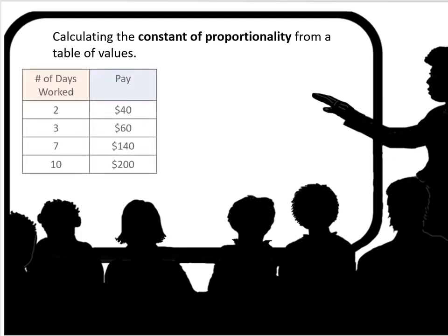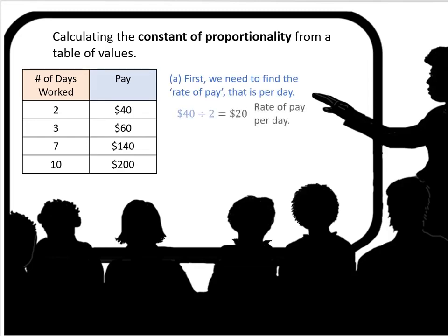Calculating the constant of proportionality from a table of values. So here we have a table showing the number of days worked and the corresponding pay. First, we need to find the rate of pay that is per day. So 40 divided by 2 is $20 a day. That's the rate of pay per day. The constant of proportionality for the values in this table is 20.